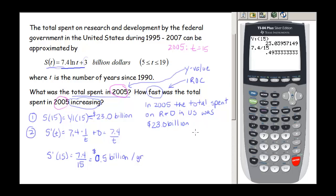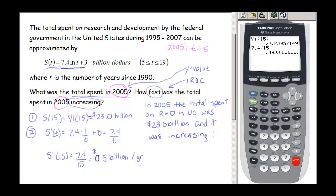So we can finish our sentence: in 2005 the total spent by the federal government on R&D in the U.S. was $23.0 billion and it was increasing at the rate of $0.5 billion dollars per year.